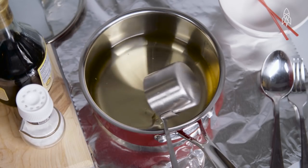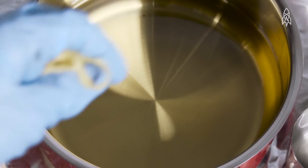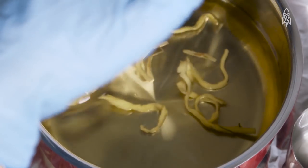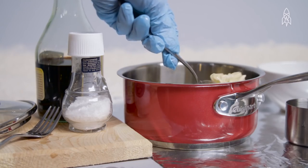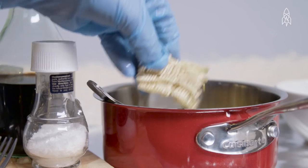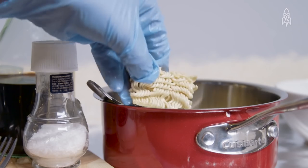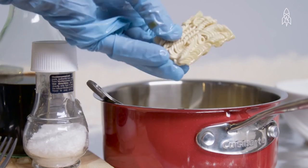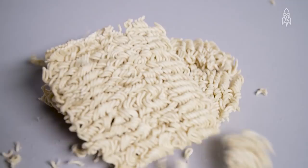It wasn't until his wife was making dinner one night and he threw some noodles in a bowl of hot tempura oil that he realized flash frying the noodles was the answer he had been looking for. This method not only dehydrated them, it left small perforations that allowed the noodles to recook quickly.